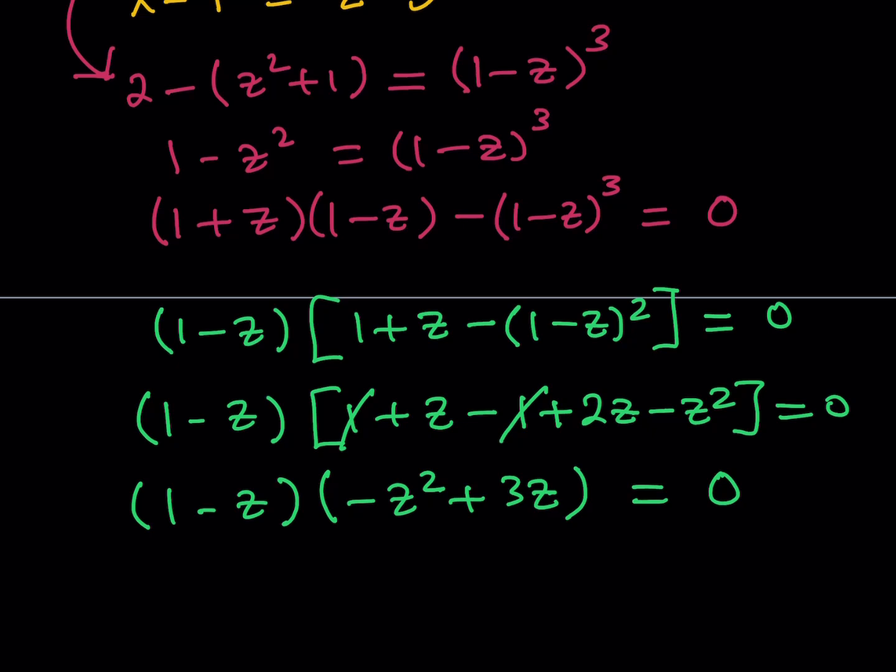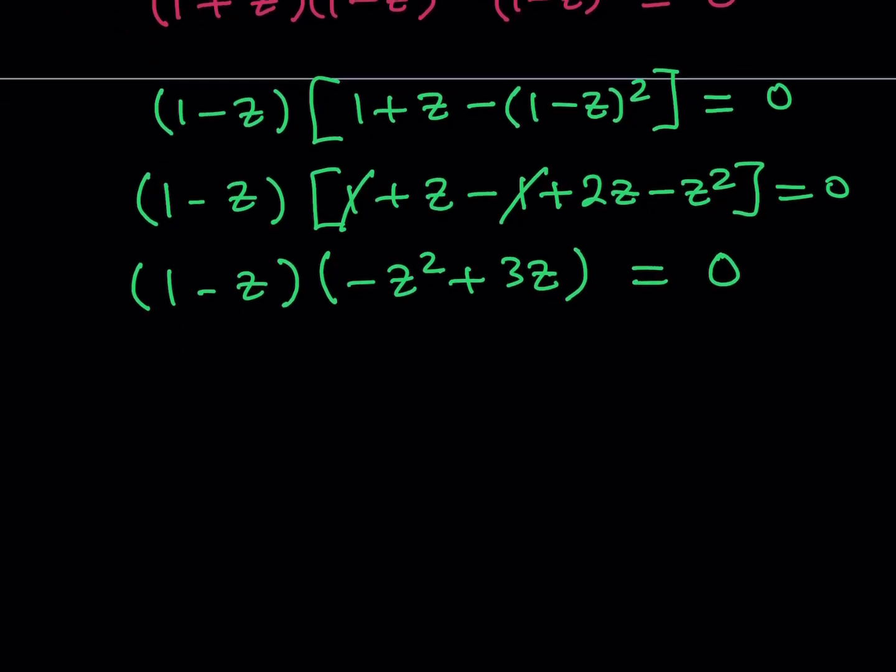Obviously, we can pull out a negative z here. If we do, then we'll get something like this: negative z multiplied by 1 minus z. And here, we're going to get something like z minus 3. And the whole thing is equal to 0. So from here, we get the z values. What are they? We get z equals 0, z equals 1, and z equals 3. Awesome.